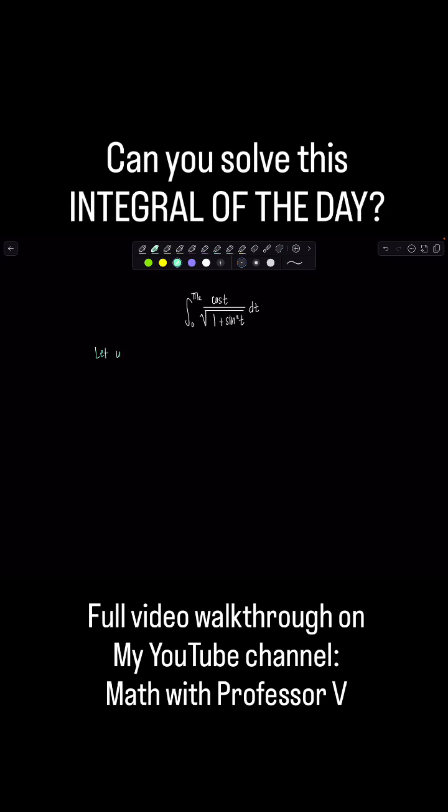So let's go ahead and do that. Let's let u be sine t and then du is cosine t dt just like we wanted.